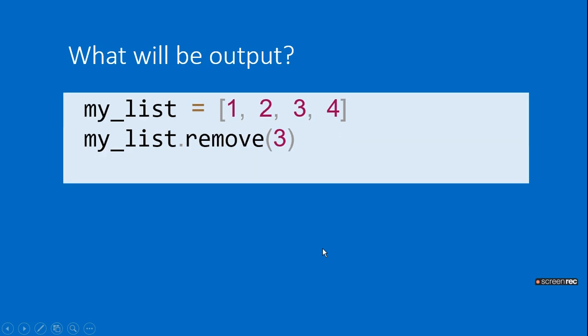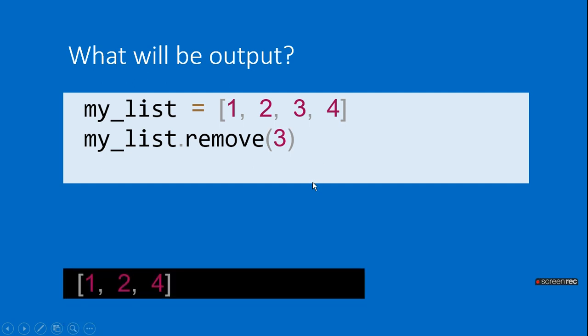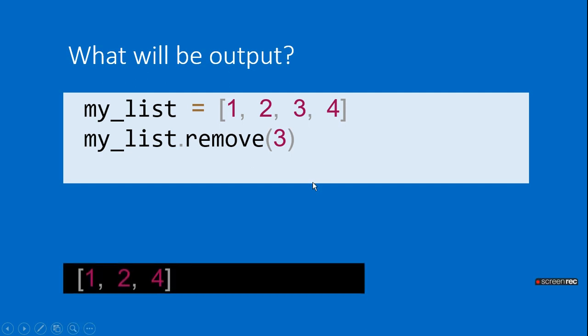What will be the output of [1, 2, 3, 4] when you call list.remove(3)? This time you have to remove 3. When you say remove(3), the list will become [1, 2, 4].